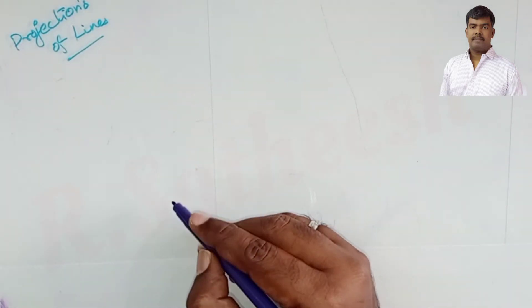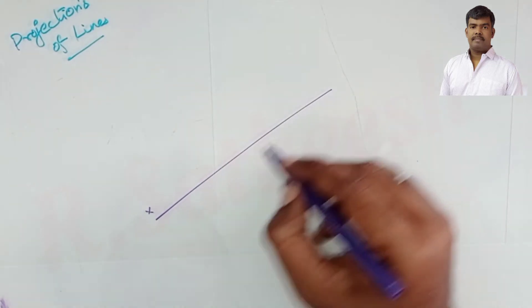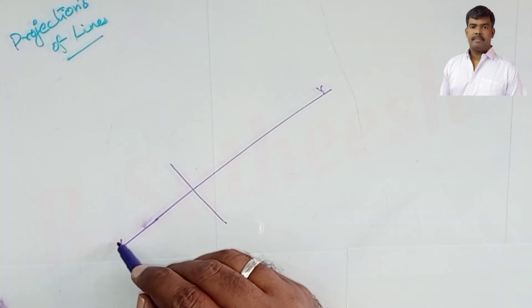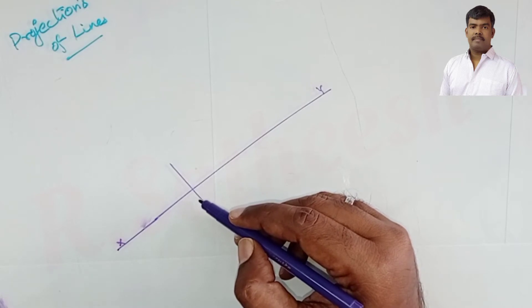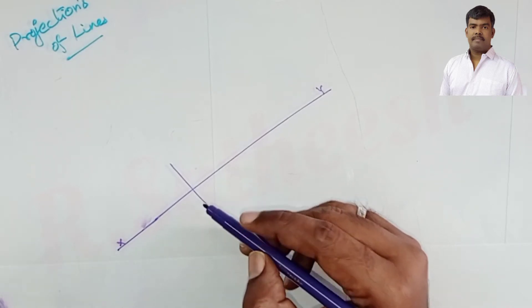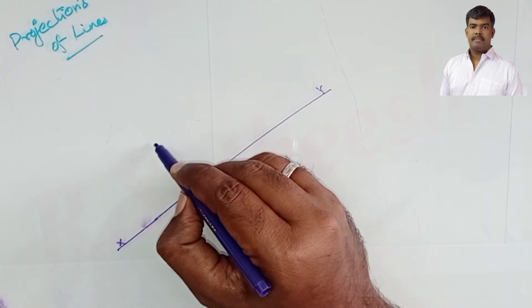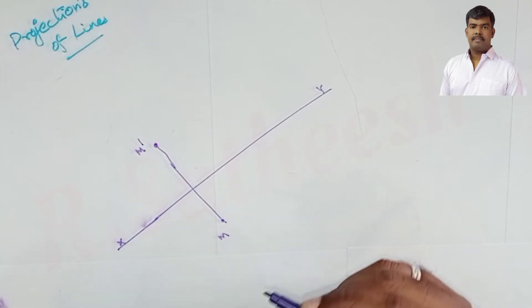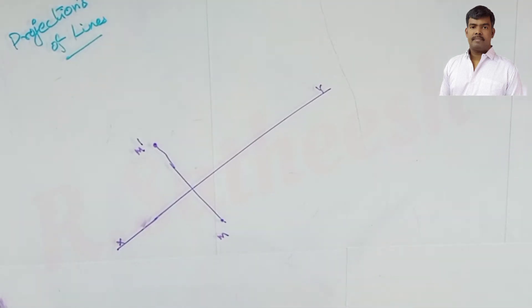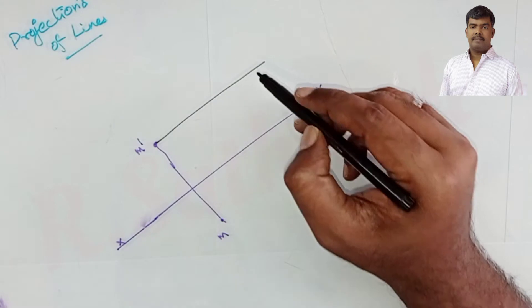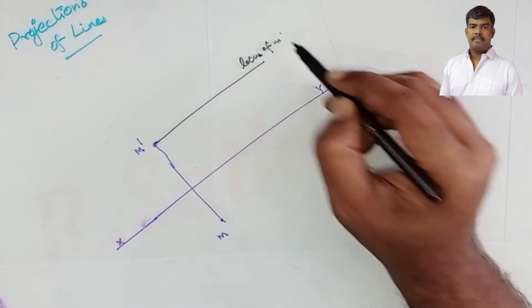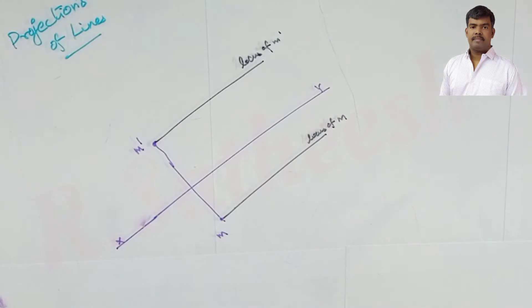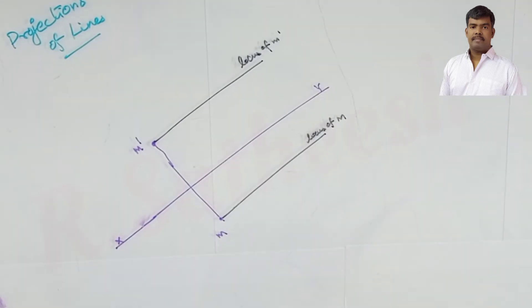First, draw the XY line. The midpoint M is 60 mm above HP, so plot m-dash at 60 mm above XY. M is 50 mm in front of VP, so plot m at 50 mm below XY. Using the same procedure, draw the locus of m-dash and the locus of m.